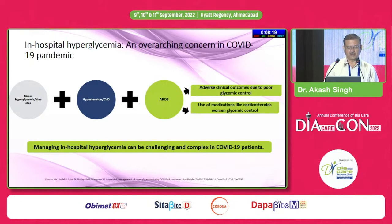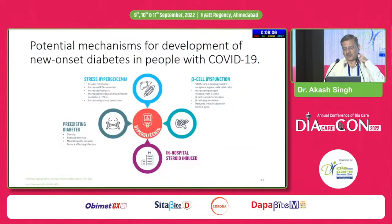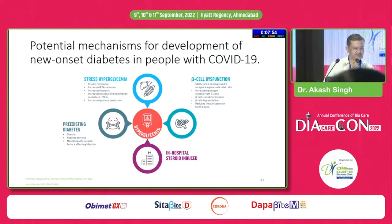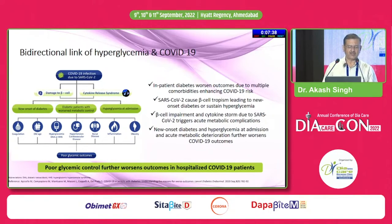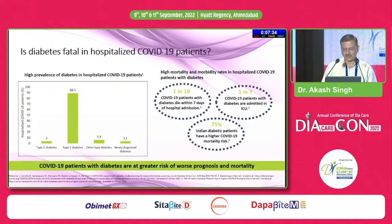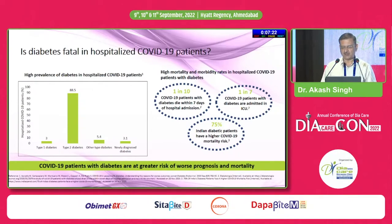Coming to COVID-19: COVID-19 causes stress hyperglycemia. A patient may be diabetic or may have developed new-onset diabetes. There may be co-morbid conditions like hypertension and cardiovascular disease, all leading to adverse outcomes. Managing inpatient hyperglycemia is challenging and complex in COVID-19 patients. Potential mechanisms for new-onset diabetes in COVID-19 include stress hyperglycemia, beta cell dysfunction, in-hospital steroid use, pre-existing diabetes, and possibly direct infection of beta cells by the COVID-19 virus. One in ten COVID-19 patients with diabetes dies within seven days; one in seven is admitted to ICU; and 75% of Indian diabetic patients have higher COVID-19 mortality risk.